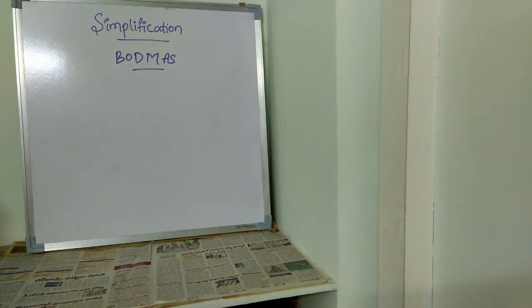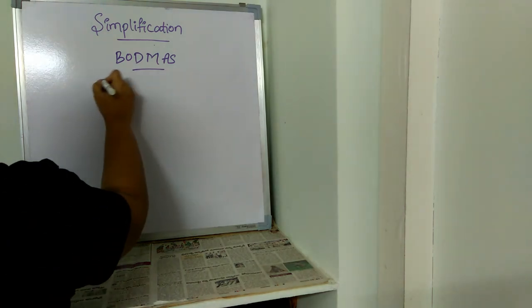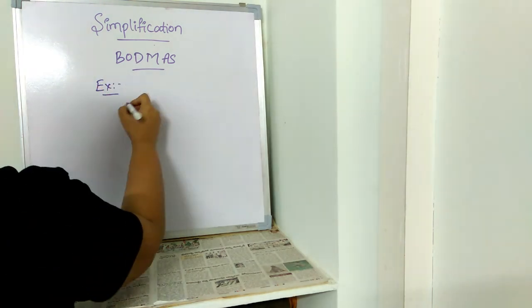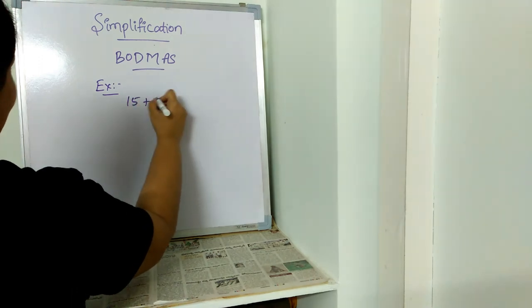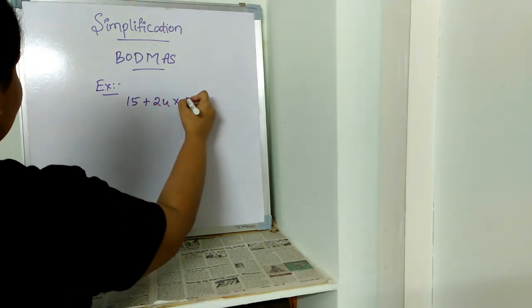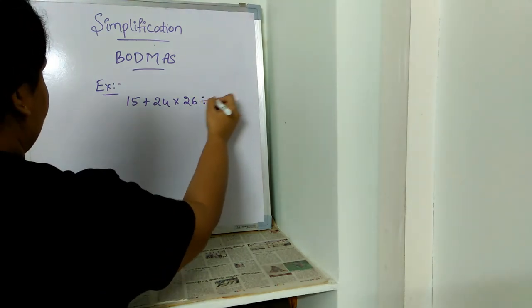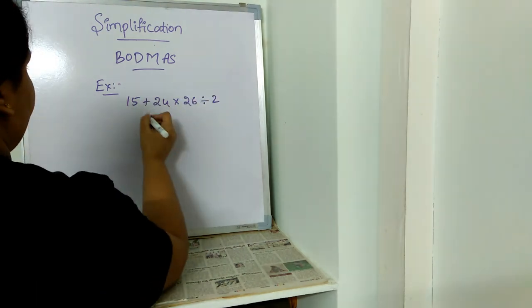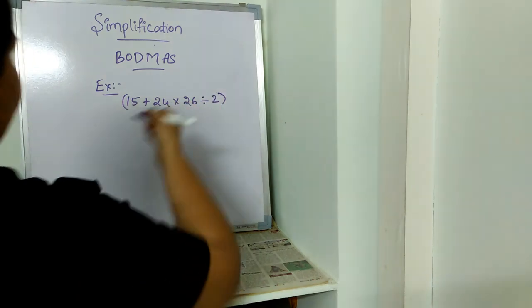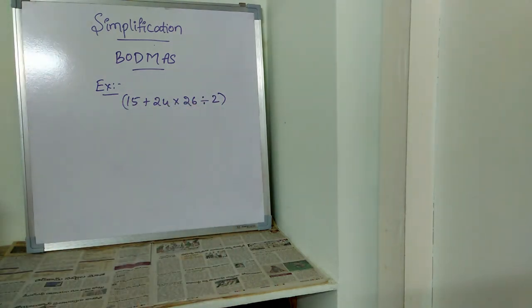BODMAS example. For example, the problem is: 15 plus 24 into 26 divided by 2. This is the given problem.